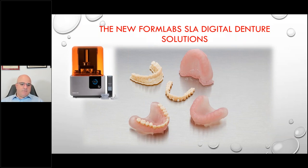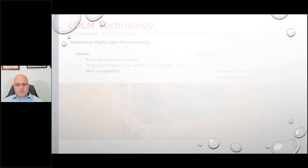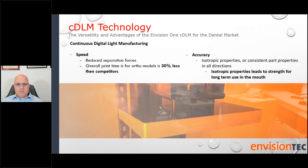There is also FormLabs — considerably slower than Envision Tech simply because it's SLA technology — but the end results are still very good. For a laboratory, different printers may be required depending on volume of work and what you're looking to invest. The opportunities for every laboratory are available at every price point. Envision Tech's CDLP allows for speed because it reduces separation forces, and it's also 30 percent less expensive on material, with isotropic properties consistent in all directions.